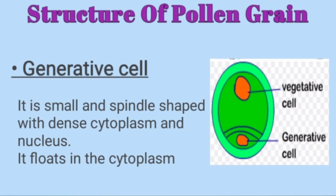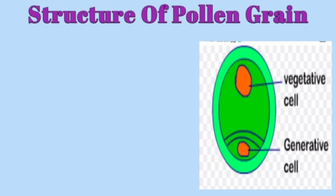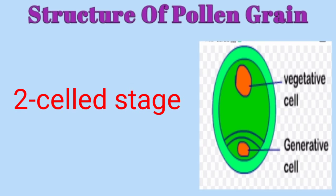The generative cell is small and spindle-shaped with dense cytoplasm and a nucleus, and it floats in the cytoplasm. As you can see in the diagram, the generative cell is smaller in comparison to the vegetative cell and is spindle shaped due to the dense cytoplasm. As there is a vegetative and a generative cell, we can call it the two-celled stage.